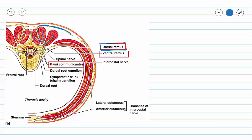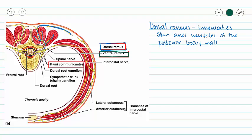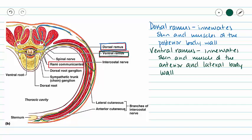Your ventral ramus will then come out and curve around to innervate the muscles and the skin of the lateral and anterior body walls. Along with the skin and muscle of our anterior and lateral body walls, our ventral ramus is also going to innervate the skin and muscles of our limbs.